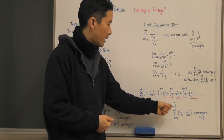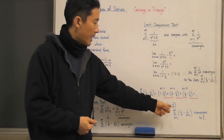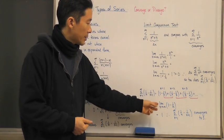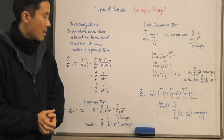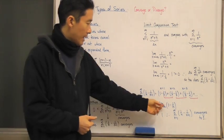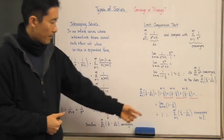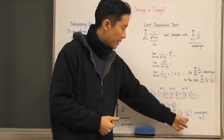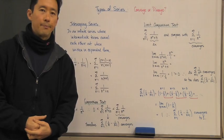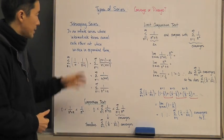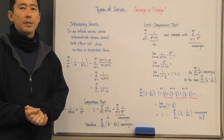What we're left with is just one minus one over n — the first term and the last term. Taking the limit as n approaches infinity, this is simply equal to one. So we know this particular infinite series converges to one.